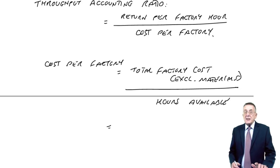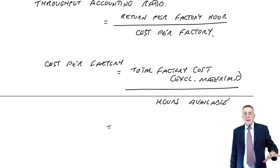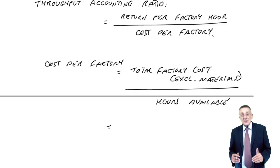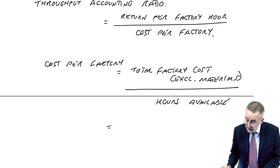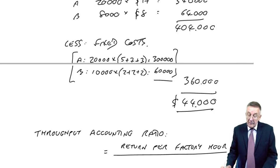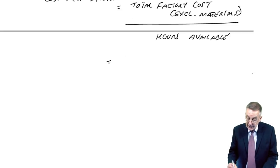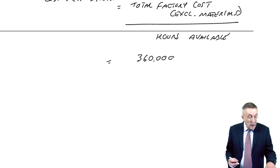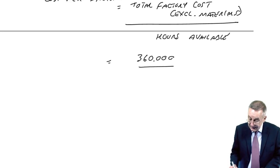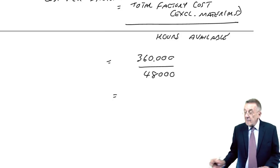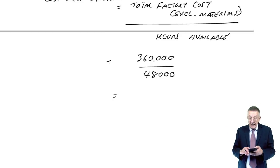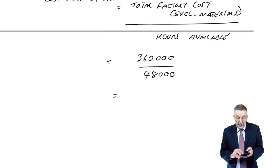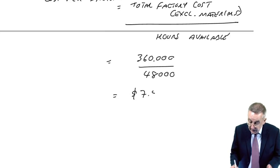What is it here? The total of all the costs in the factory, excluding materials, so the fixed factory costs. You'd probably be given, here we calculated, it's 360,000. How many hours are available in the factory? 48,000. And so we say the cost per factory hour, the cost per hour of running the factory, 360,000 over 48,000, is $7.50.